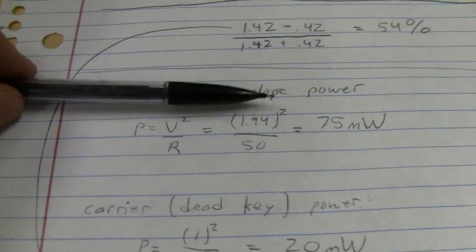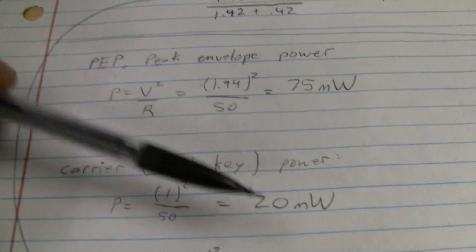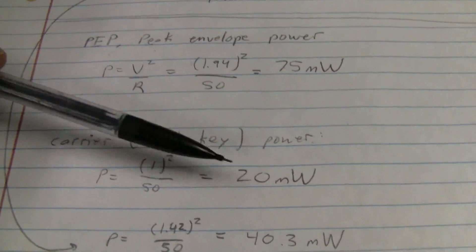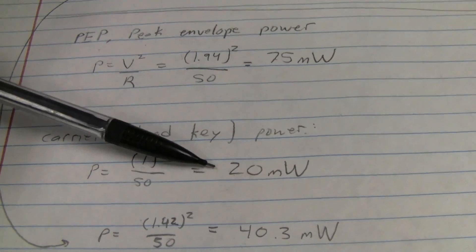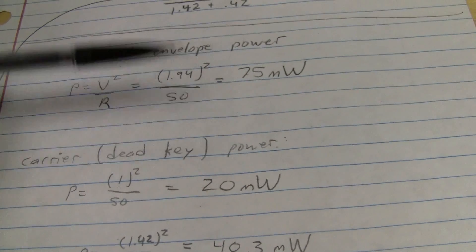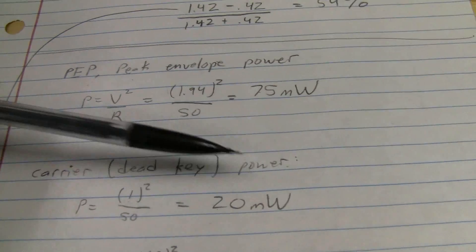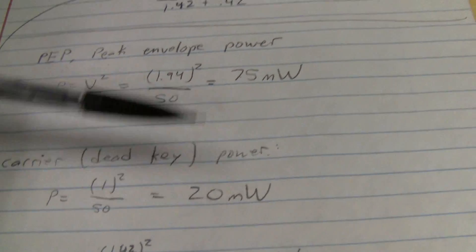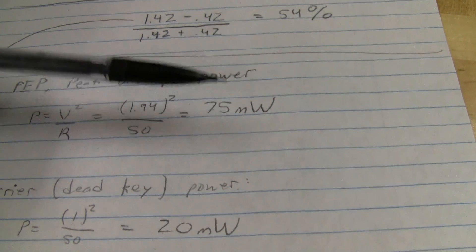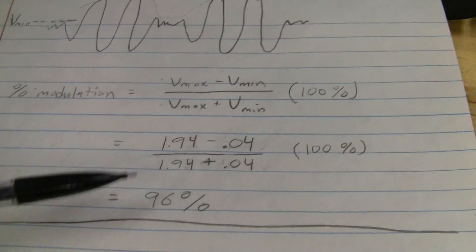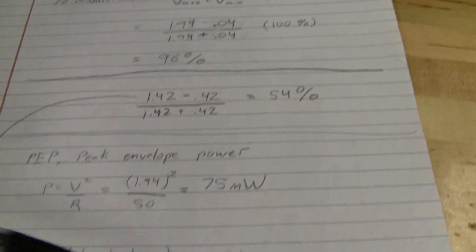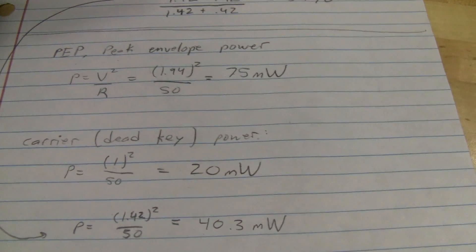When people talk about swing — your dead key, four watts swinging whatever — if you're dead keying four watts, you want to swing four times that, or 16 watts. In this example we're 20 milliwatts swinging 75 milliwatts, which resulted in 96% modulation. So it's all kind of intertwined — modulation and peak envelope power.